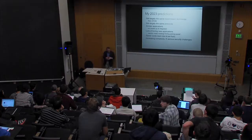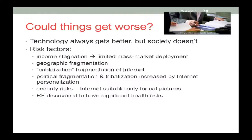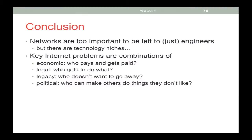If I were to conclude with my predictions: we will in a number of years still be using the same transmission technology — fiber or FDM type — still largely the same protocols, similar applications but much better scaled up and integrated. We'll have lots of boring new applications: parking meters, electric meters, and so on. While there are fewer cords, there will be an increase in complexity and interconnection because of that. Finally, networks in my view are too important to be left just to engineers, and other people recognize that. The lawyers and economists have no compunction at all about making their opinions known.